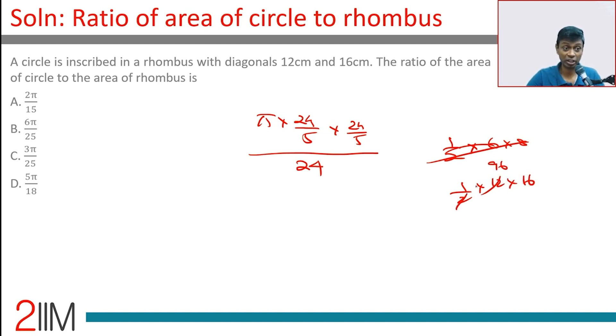It's 96. I made a mistake there. I was worried none of the choices were matching. Thankfully the choices are available for this one. It is 96 and not 24. I took half the diagonal, not the full diagonal. It should be half into d1 into d2. I did half into d1 by 2 into d2 by 2. So this is 5 into 24 into 24 by 25 into 96.